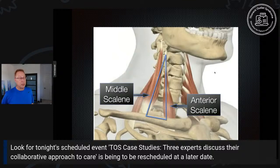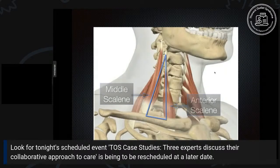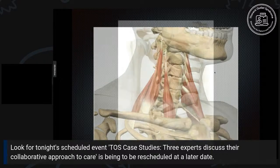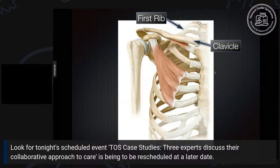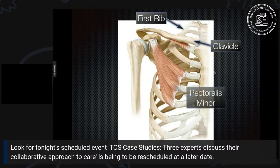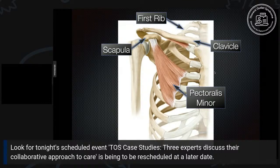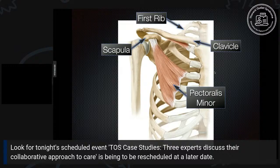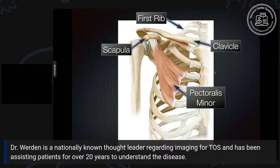You'll notice the scalene triangle won't change much with neck position or arm motion — it's pretty tight and fixed. But once the nerves and blood vessels pass through this space, they enter the next tunnel, a bony tunnel called the costoclavicular interval. What is important is that you can see the first rib and the collarbone, and between those two bones is a bony space — the second tunnel the nerves and blood vessels must pass through.